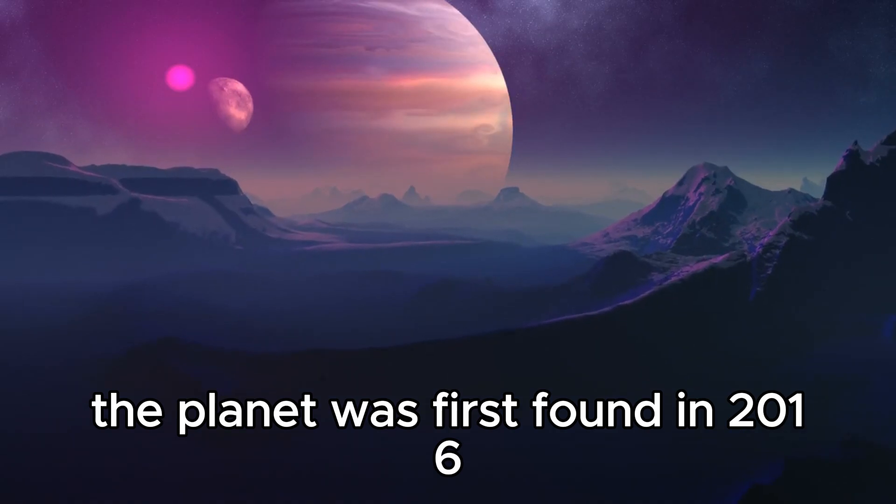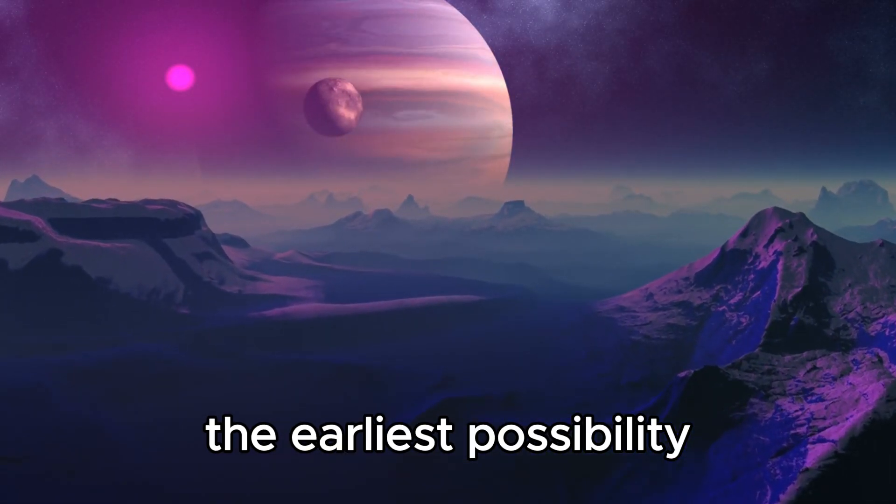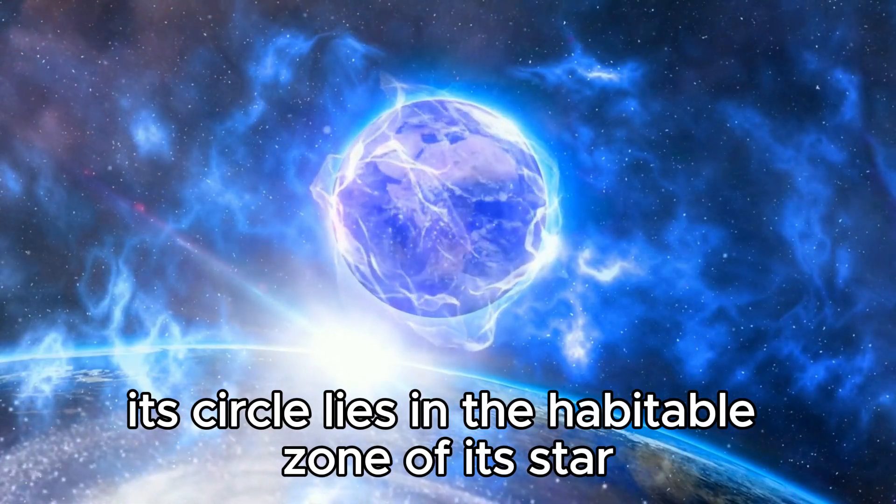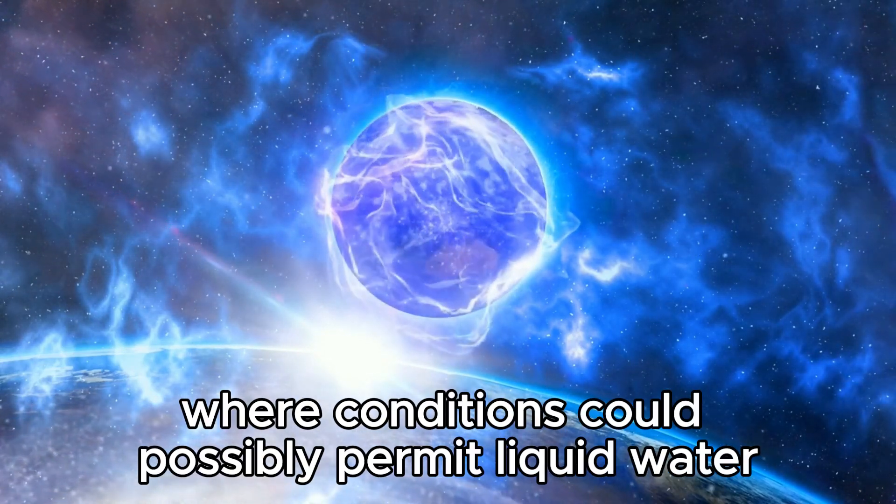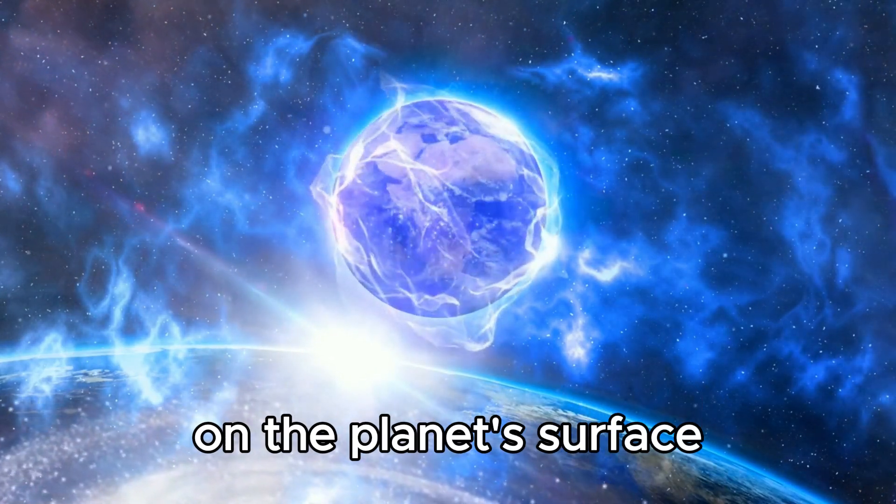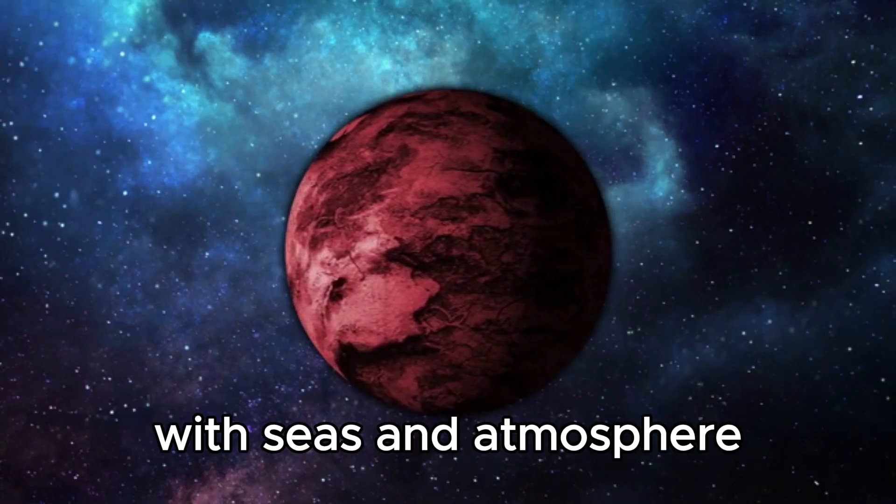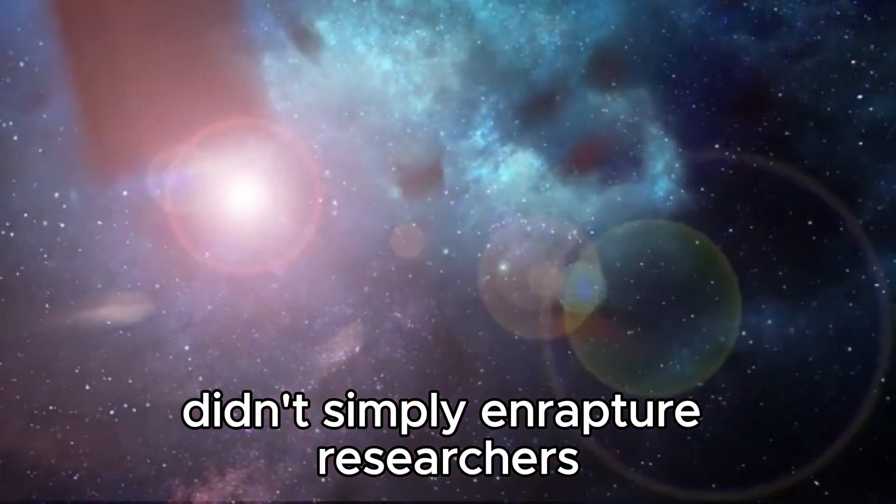The planet was first found in 2016, and Proxima b was perhaps the earliest possibility for the revelation of extraterrestrial life. Its circle lies in the habitable zone of its star, where conditions could possibly permit liquid water on the planet's surface. The possibility that Proxima b could be a world with seas, an atmosphere, and maybe even life didn't simply enrapture researchers.